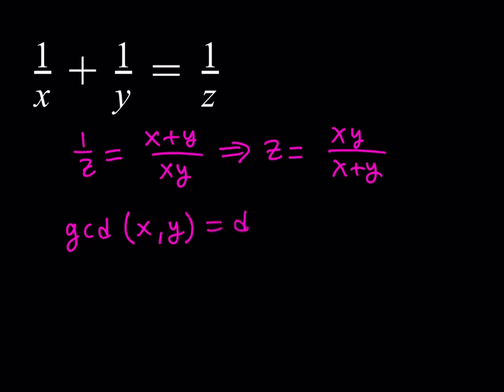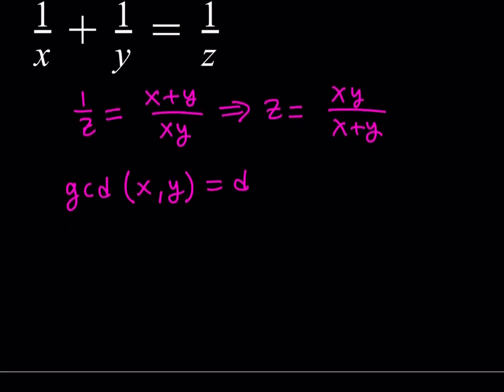So d basically divides x and y, and there's nothing larger that divides x and y, which means x is a multiple of d, so I can write x equals dm. And y is a multiple of d, I can write it as dn, where m and n are integers, as well as relatively prime.